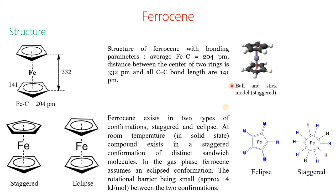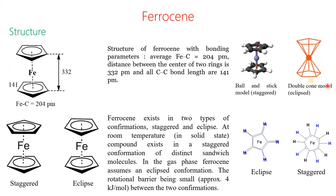Another way to represent the structure of ferrocene is the ball-and-stick model, shown here for the staggered conformation. There is also the double cone model, shown here for the eclipsed conformation. There are several ways to draw the structure of ferrocene: it may be a double cone model, a ball-and-stick model, sometimes a space-filling model, and sometimes shown as an ellipsoid.